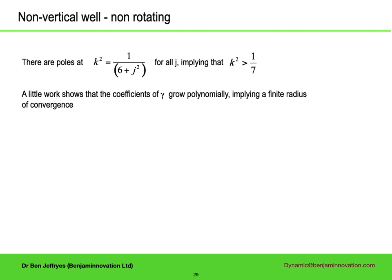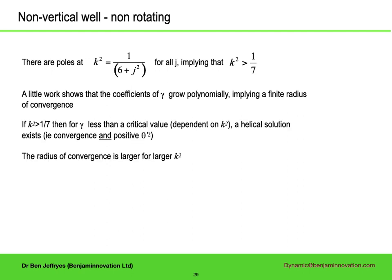So long as k is larger than 1 over root 7, a bit of work shows that there will be a finite radius of convergence for gamma, as the coefficients of gamma are growing polynomially. As well as converging, the squared gradient of theta must be positive. For fixed axial load, gamma is proportional to the force of gravity. So for any pitch over 1 over root 7, up to a certain amount of gravitational force, there will be a mathematical helical solution, which may or may not be a physical solution, depending on the normal force. In reality, as gamma increases, the theta dash squared expansion goes to zero, and thus fails to be a solution, before the value of gamma is reached at which the expansion fails to converge.